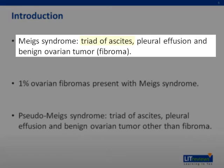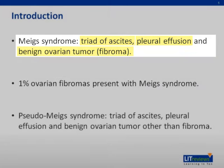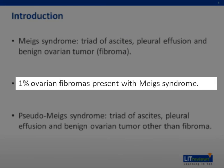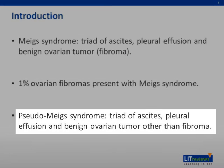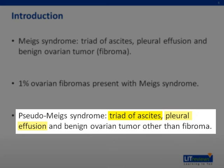Meigs' syndrome is defined by the triad of ascites, pleural effusion, and a benign ovarian fibroma. 1% of patients with ovarian fibromas present with Meigs' syndrome. Pseudo-Meigs' syndrome is the triad of ascites, pleural effusion, and any benign ovarian tumor apart from a fibroma — an example includes a mature teratoma.